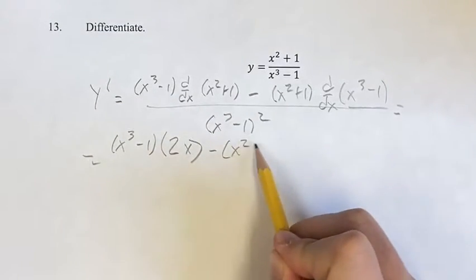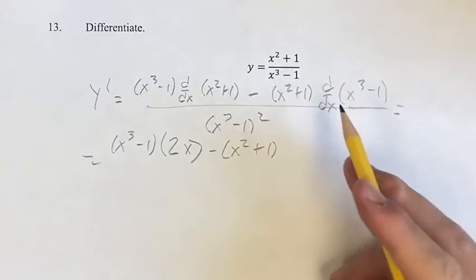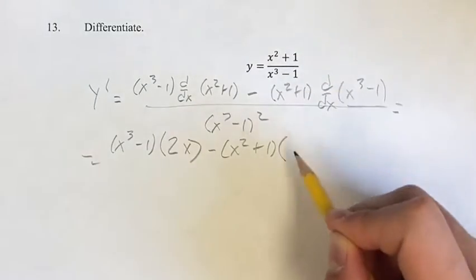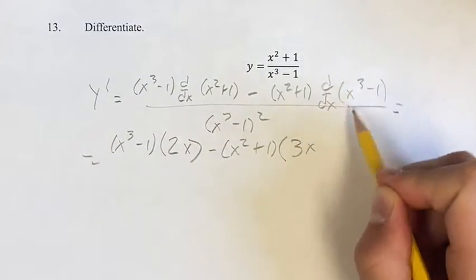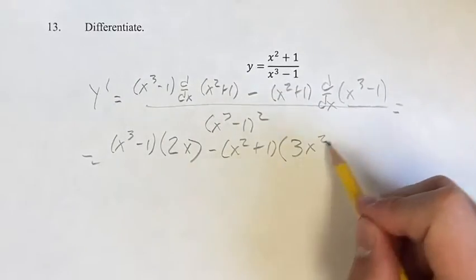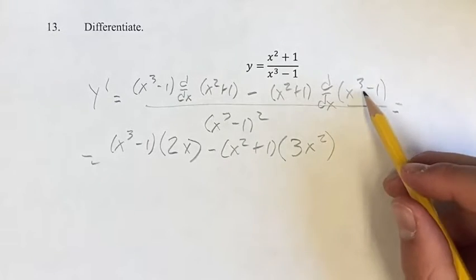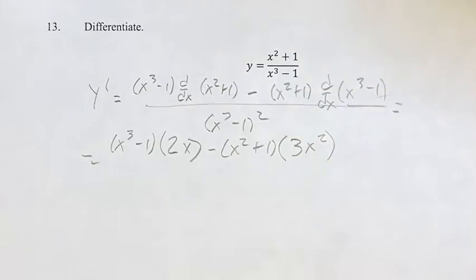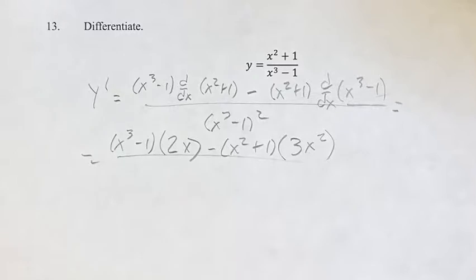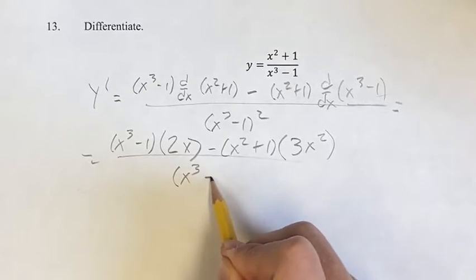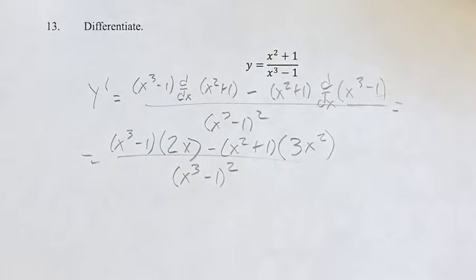Minus x squared plus 1 times the derivative of x cubed. Again, power function, bring down the exponent, subtract 1 to get your new exponent. So bring down the 3, and 3 minus 1 for your exponent gives you 2. And then again, 1 is a constant, so we're basically subtracting 0 in terms of the derivative, so we can just ignore that. This is all over x cubed minus 1 squared.